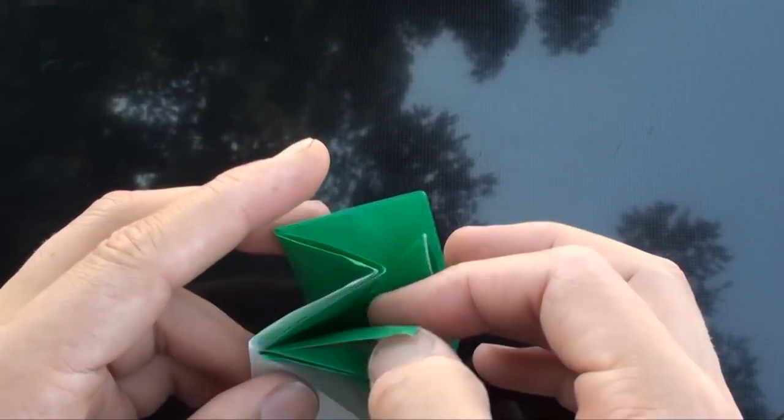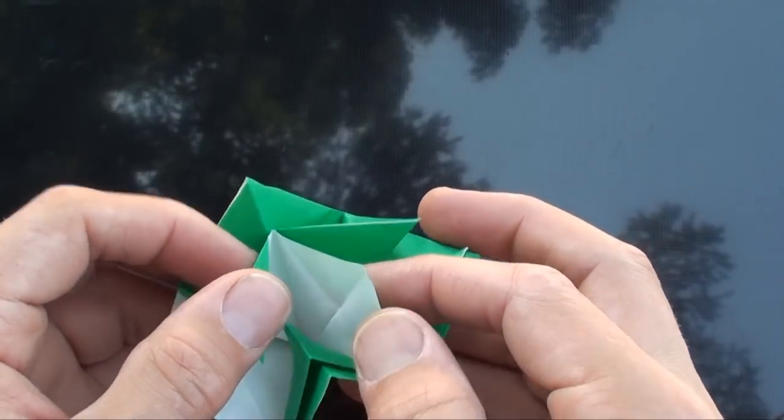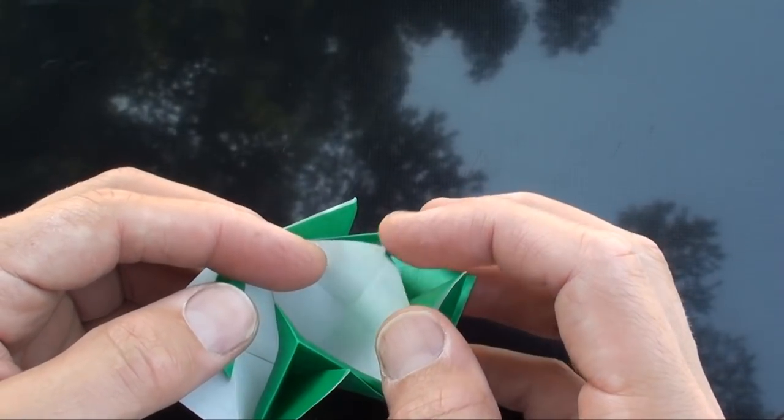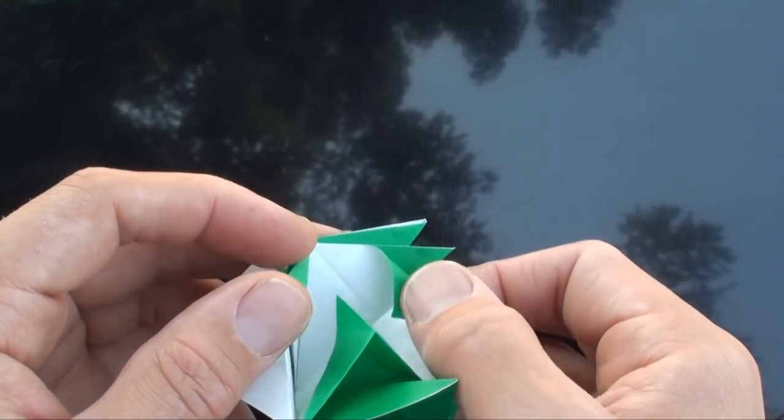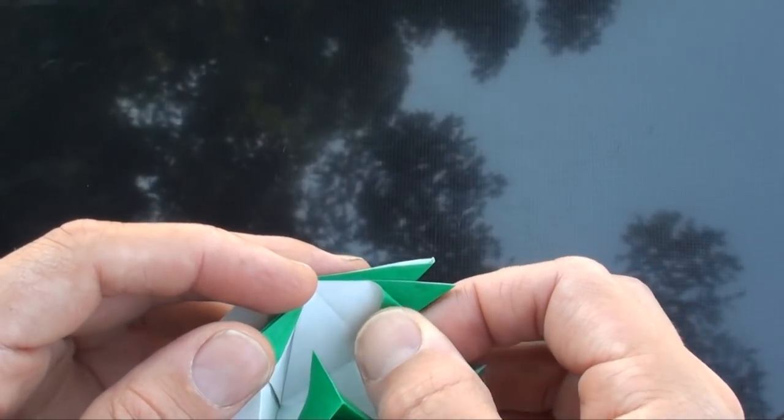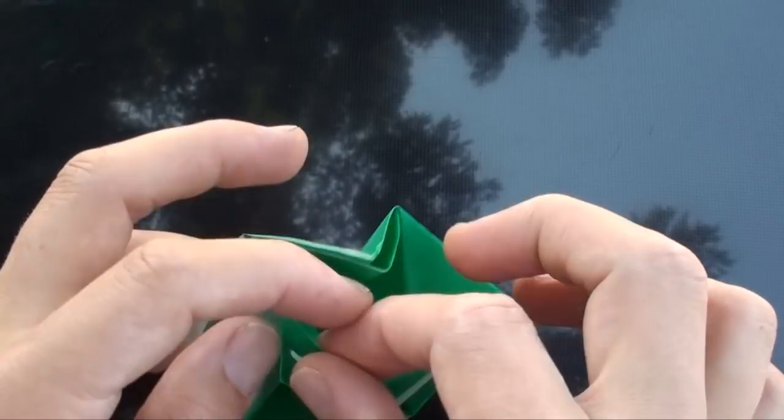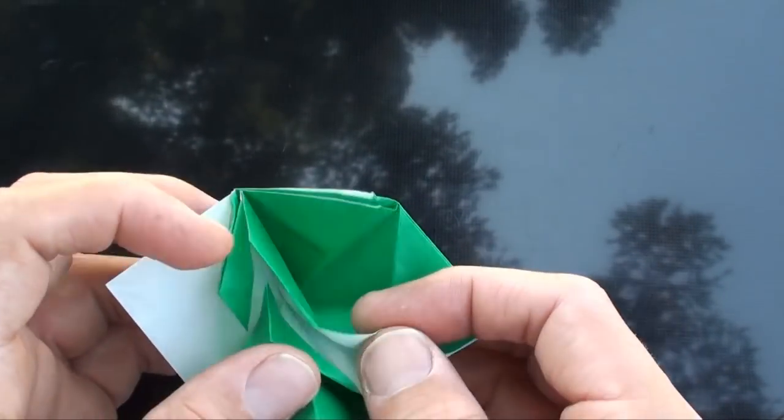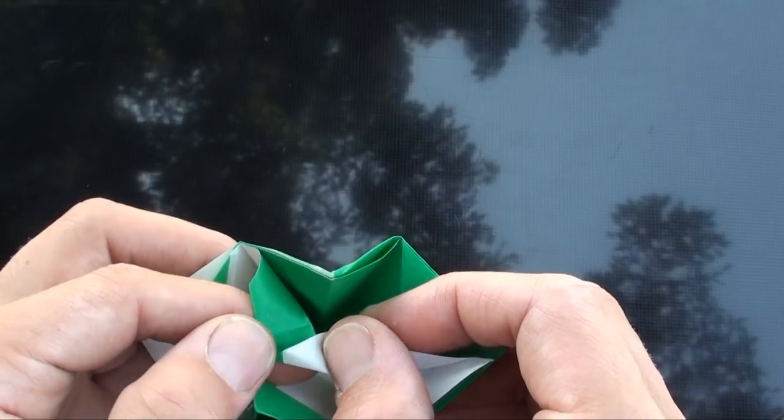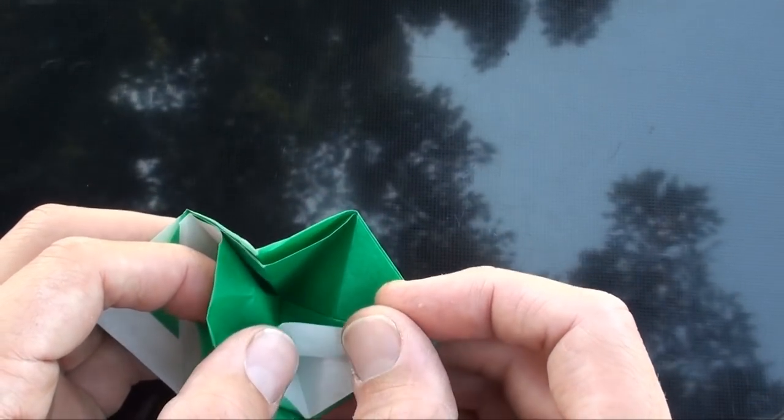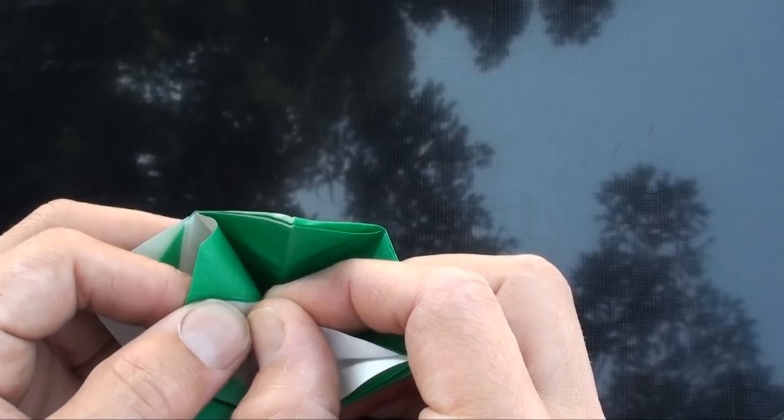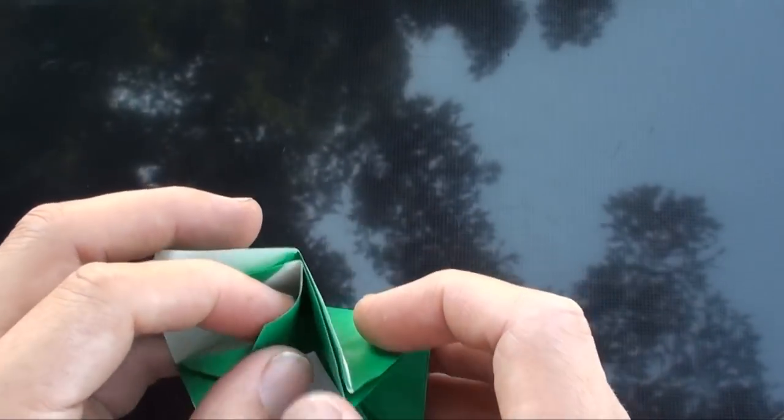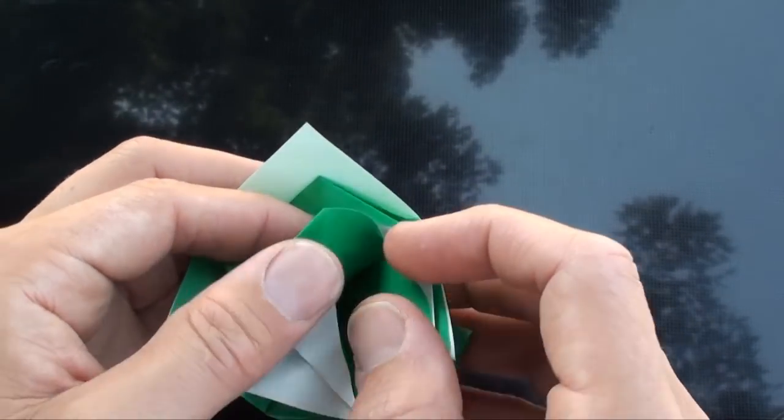We're also going to make a petal fold out of this flap right here. So first, fold the corner to the intersection point right there. And now we're going to fold these edges in. This is a reverse fold, so we're folding this edge to there. This edge to the crease. Like that. And again on this side.